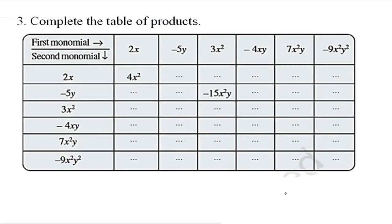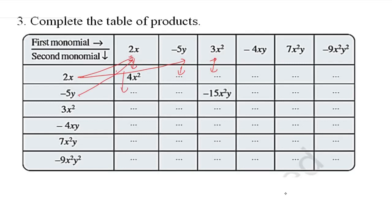Question 3: complete the table of products. देखिए first column में 2x है और first row में भी 2x है, तो 2x × 2x = 4x² already दिया है। इसी तरह first का multiplication second, third से करना है और answer नीचे लिखना है। सभी को same way में complete करना है — बस product find करते time ध्यान रखिएगा।